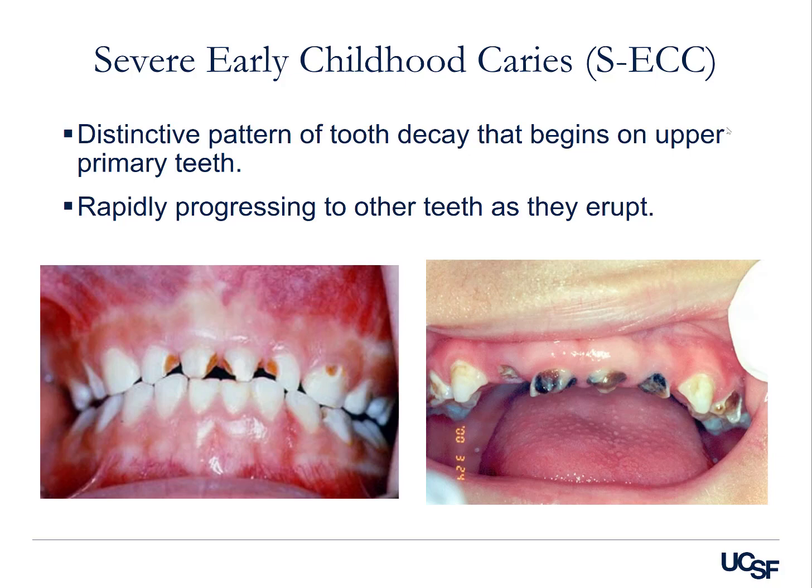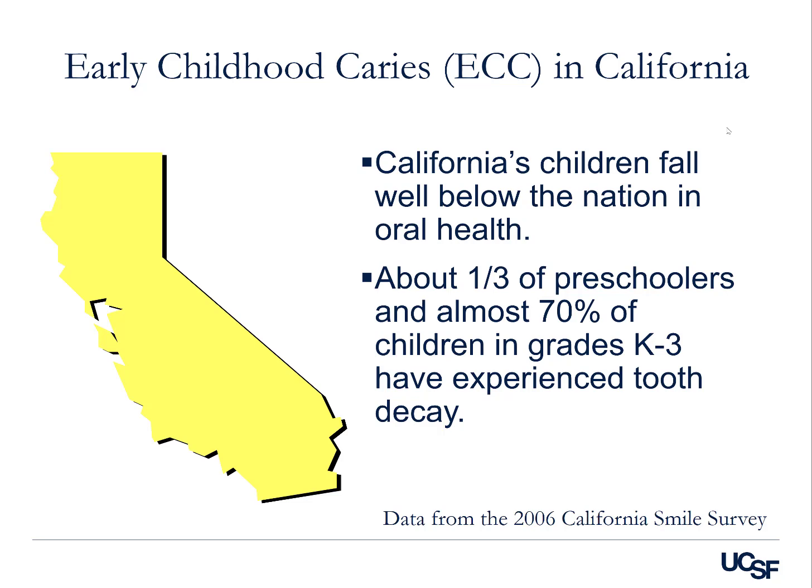In California — known to be a high-tech and affluent state — our children fall well below the national average for oral health. About one-third of preschoolers, and almost 70% of children from kindergarten to third grade, have experienced tooth decay. This data was extracted from the 2006 California Smile Survey.